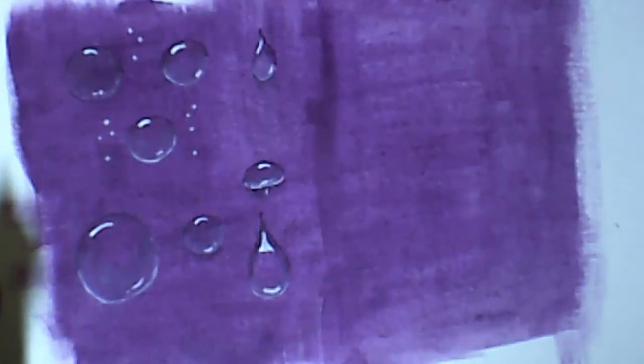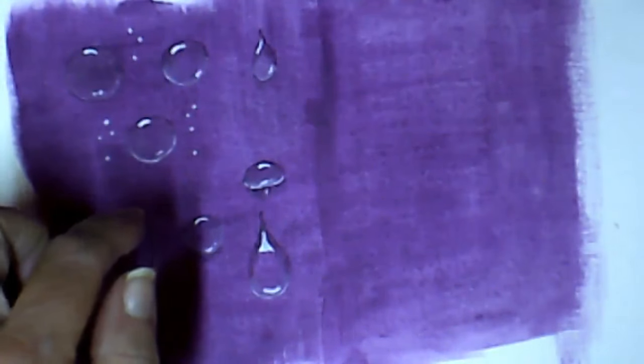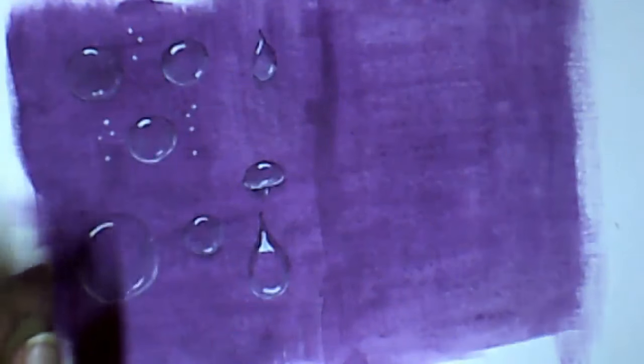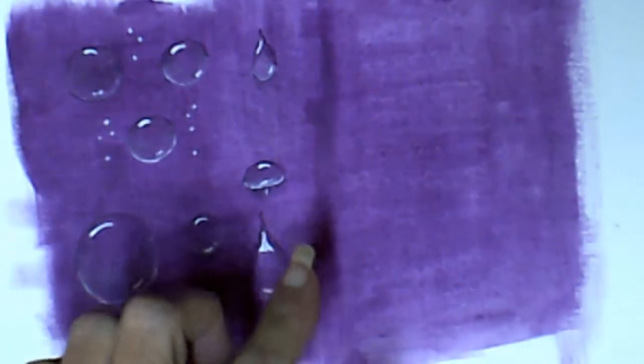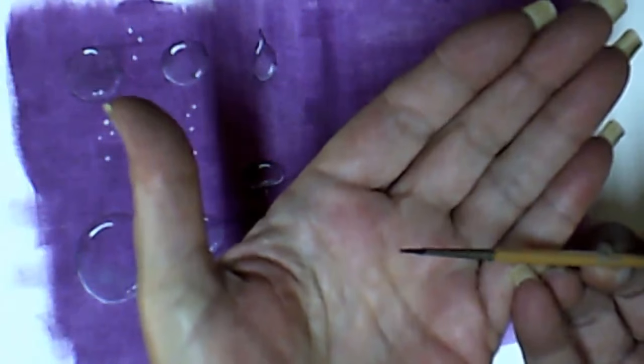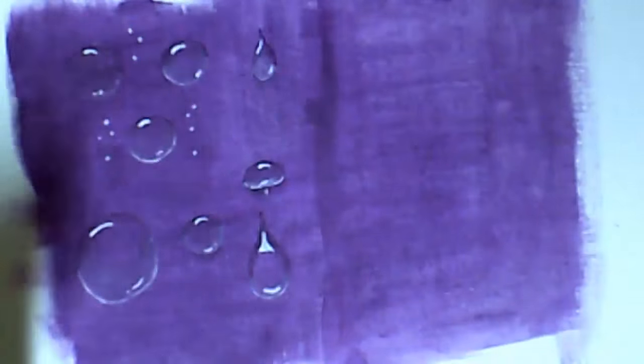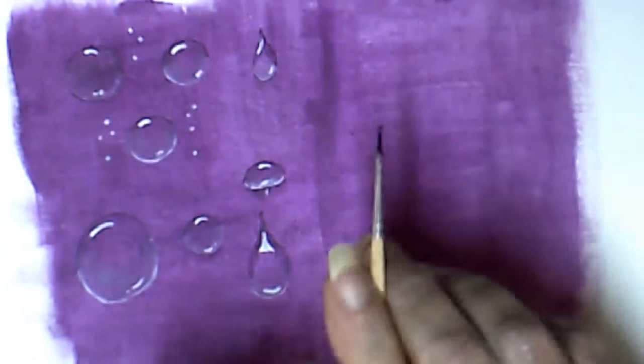We're going to do the top part of our bubble, which is the shadow part, with a slightly darker hue of our background color. I've added just the very tip of my paintbrush, just touched it into the black and mixed into my deep violet that I'm using.